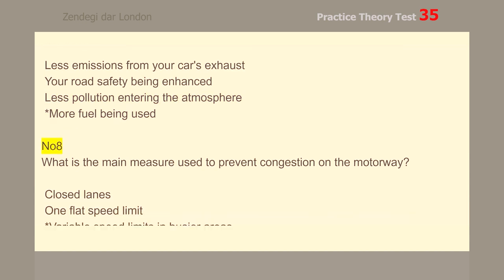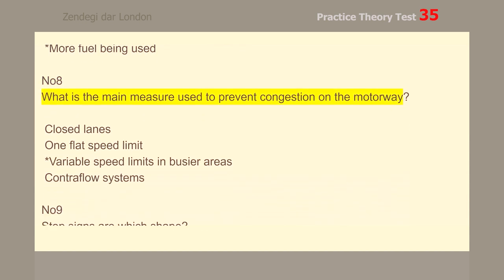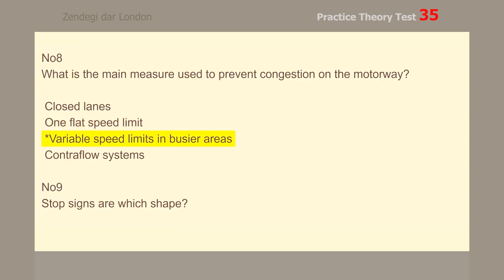Number 8. What is the main measure used to prevent congestion on the motorway? Variable speed limits in busier areas.